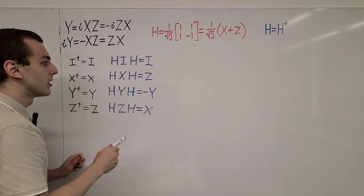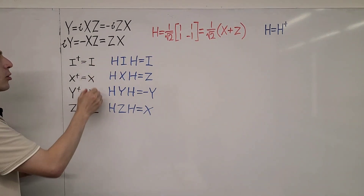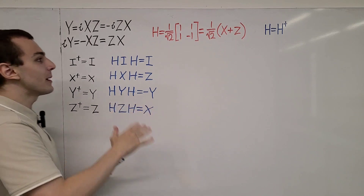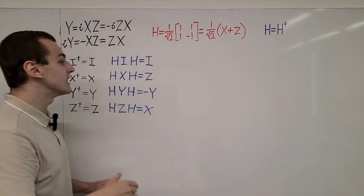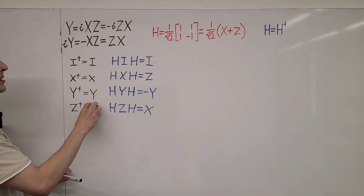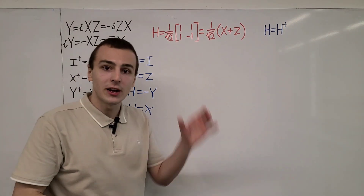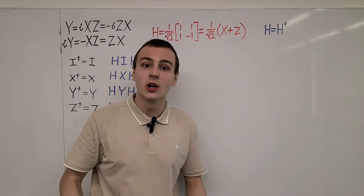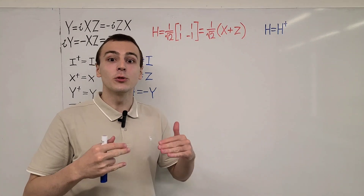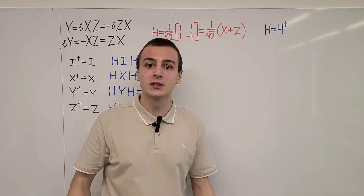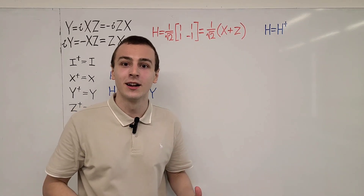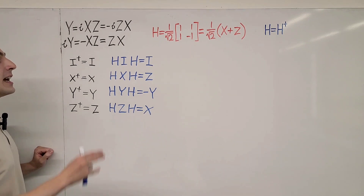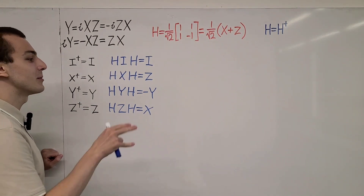Why am I showing this in this form? Well, it's because these four operators form an orthonormal basis — you can think of them as basis vectors. Any two-dimensional matrix can be represented as a linear combination of these four basis vectors. Matrices can be thought of as vectors because they satisfy all the axioms of a vector space, and in fact they also satisfy the additional axioms of an inner product space, where the inner product is defined by taking the product of matrices and then the trace.